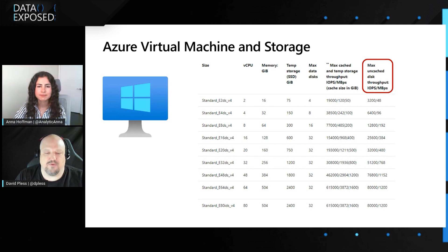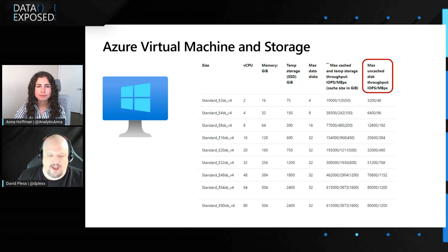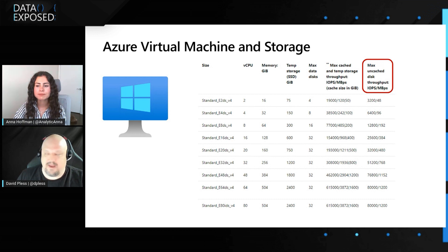This is based on the virtual machine type and size. IOPS is the number of requests per second and throughput is the actual bandwidth, or the amount of data that can be transferred per second. Looking at our documentation at the virtual machine level, if we consider for example the E32 DSV4, you get a maximum uncached disk limit of 51,200 IOPS and a throughput limit of 768 megabytes per second. That max uncached disk throughput for IOPS and throughput is a really key thing to target from a performance perspective.